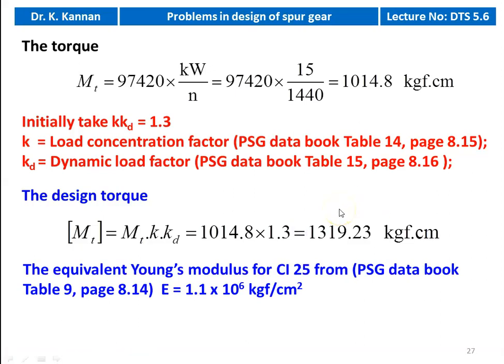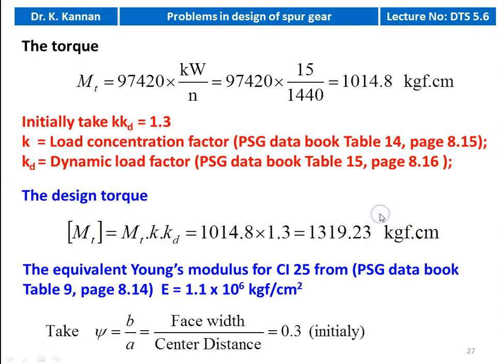We take the equivalent elastic modulus for cast iron grade 25 from the PSG data book page number 8.14: E = 1.1 × 10⁶ kgf/cm². Both pinion and gear are made of cast iron. We take ψ (b/A) = 0.3 initially.